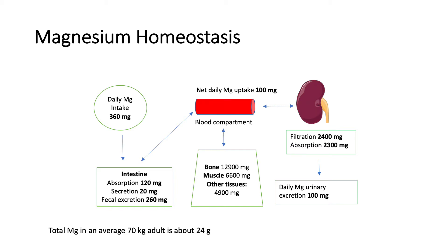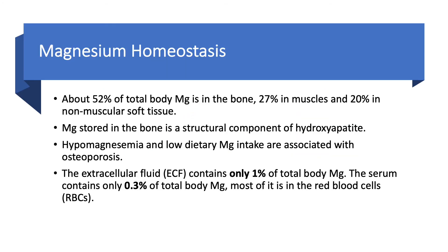In a 70-kilogram adult, we have about 24 grams of total body magnesium. About 52% is in the bone — part of the hydroxyapatite structure with calcium and phosphorus — which is why low magnesium intake is associated with osteoporosis. About 27% is in the muscles and 20% in other soft tissues. The extracellular fluid magnesium is only 1% of total body magnesium, and in the serum only 0.3%, with most of that in the red blood cells.